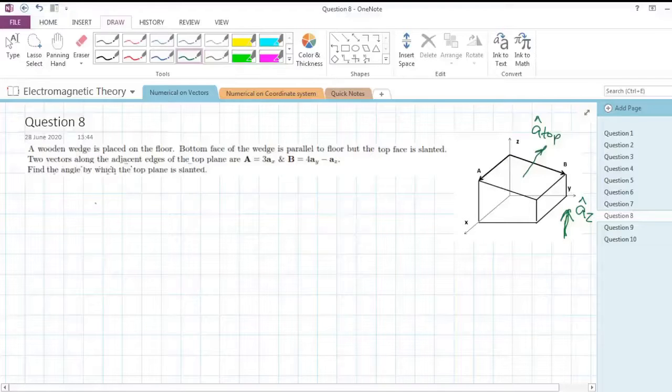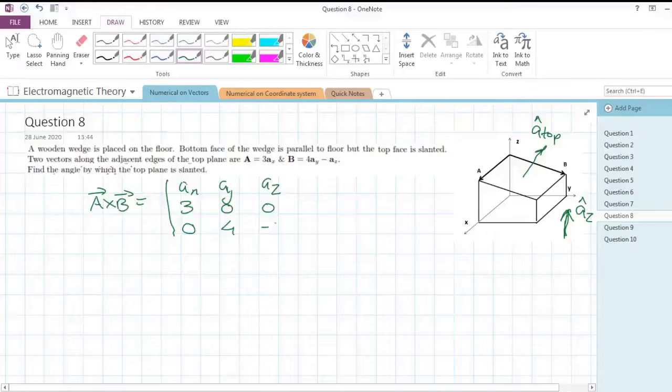First of all, we need to find the cross product of vector A and vector B. To do it, we'll form a determinant: ax, ay, and az. A has only x component, so we'll write 3 here, 0, 0. And B has no x component, only y and z components.